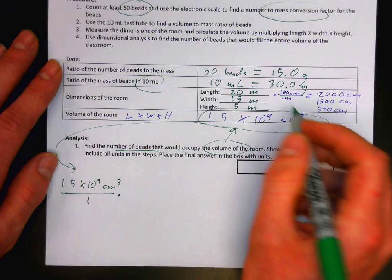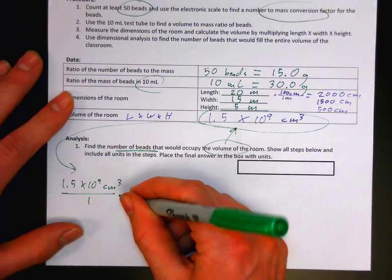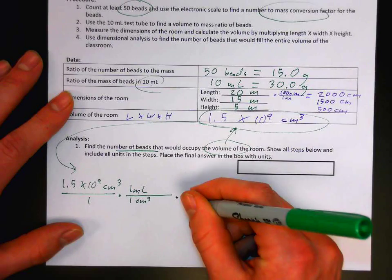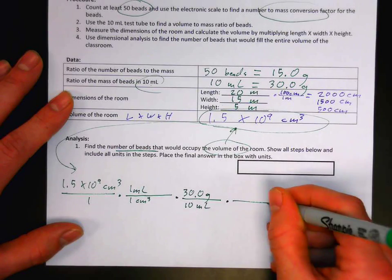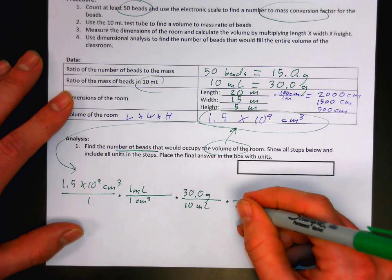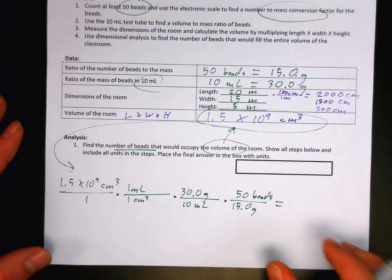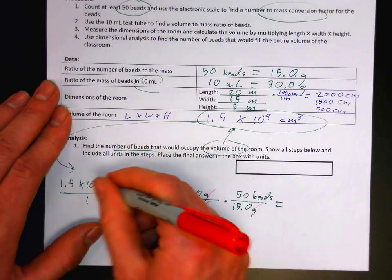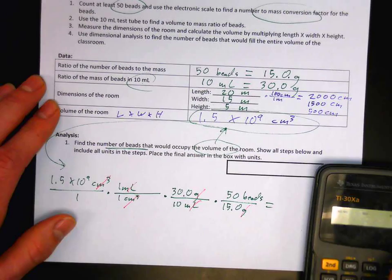So we have centimeters cubed — what do we do with that? We found an equality: for every 1 centimeter cubed, there is 1 milliliter. Then for every 10 milliliters, there are 30.0 grams. And for every 15.0 grams, there are 50 beads. It's all set up — the units will cancel. Multiply across the top, multiply across the bottom, write those answers, and then divide.